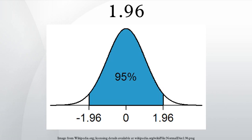There is no single accepted name for this number. It is also commonly referred to as the standard normal deviate, normal score, or z-score for the 97.5 percentile point, or 0.975 point.